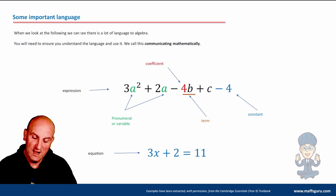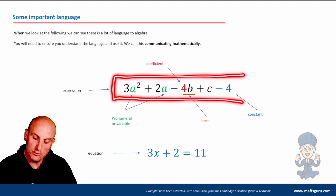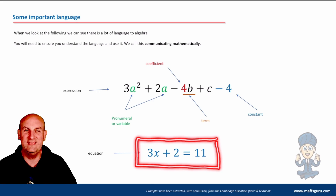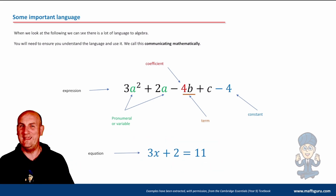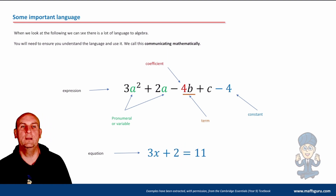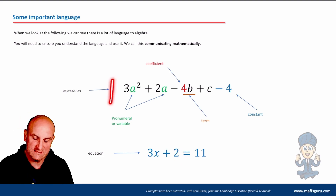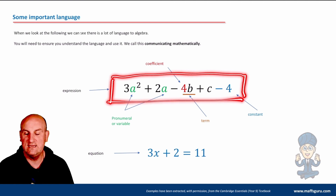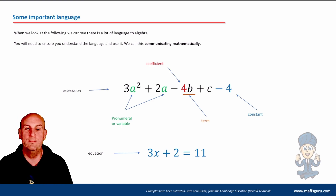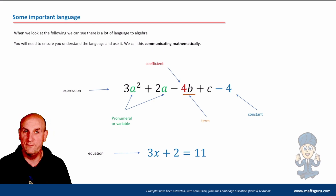This whole thing here is called an expression. It's very different from an equation - that equals sign makes it an equation. Because this doesn't have an equal sign in it, it is an expression. What we can do with expressions is simplify them - make them look easier. With equations, we can evaluate or solve them.